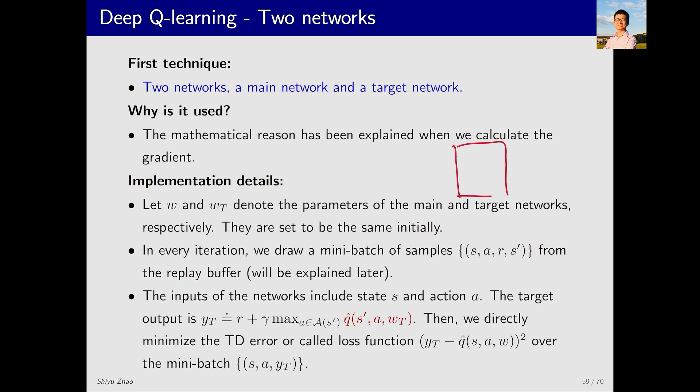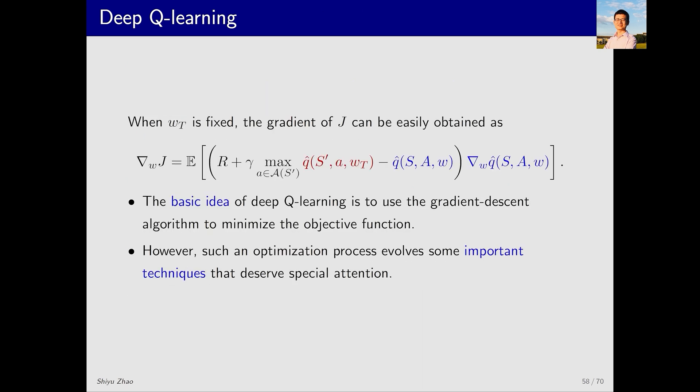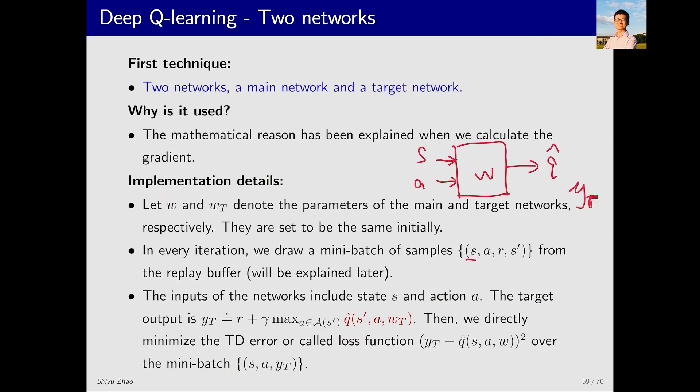First consider the main network, whose parameter is W. The inputs are S and A, and the output is Q hat. I want Q hat to be close to Y_T. What is Y_T? Let's go back to the earlier objective function. You can see that I want Q hat to approach this value, and this is Y_T. Note that to calculate this Y_T, I need to compute Q hat using the parameters W_T.